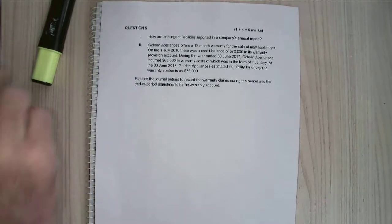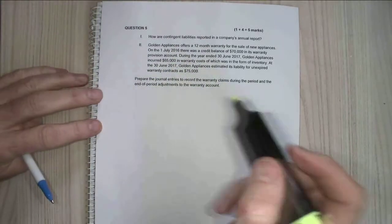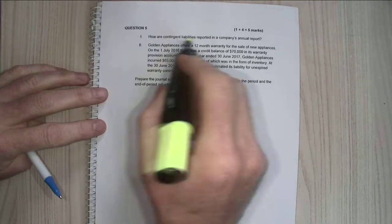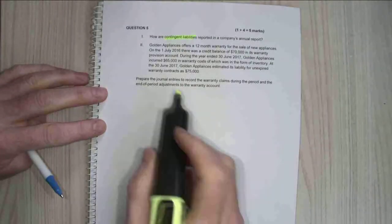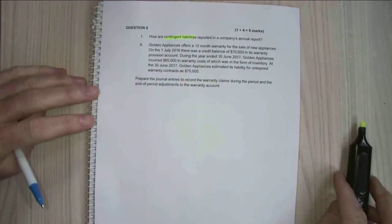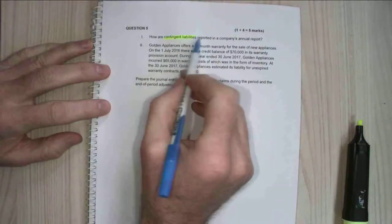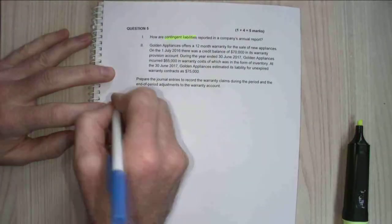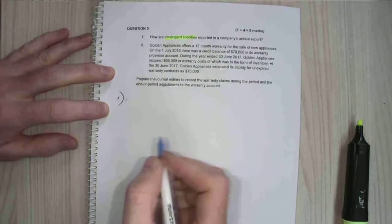Okay, question five. This is obviously my liability section, because I'm looking at contingent liabilities there and I'm looking at a further liability here. Now the first question asks me, how are contingent liabilities reported in the annual report?